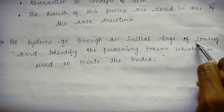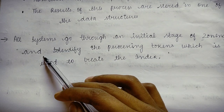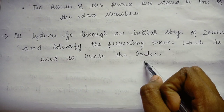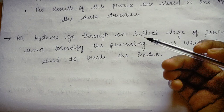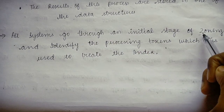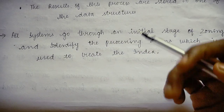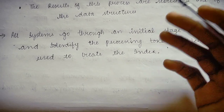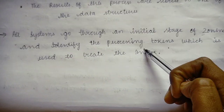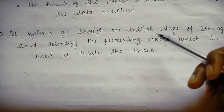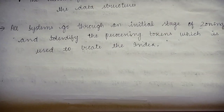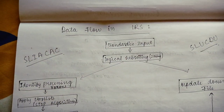All systems go through an initial stage of zoning and identify the processing tokens, which are used to create the index. In zoning, basically, the item gets scanned and the system identifies which kind of processing tokens are being used, and these are then used to create the index.